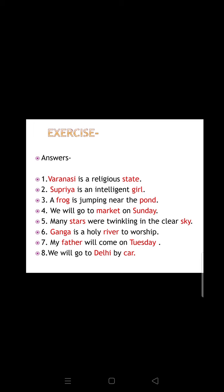Varanasi is a religious state — Varanasi is a place and state is also a place, so both are nouns. Next: Supriya is an intelligent girl — Supriya and girl are both person nouns. Third: a frog is jumping near the pond — frog is an animal and pond is a place, so both are nouns. Now try to solve the rest yourself and check your answers on the next page. In the next session we'll move forward and learn about kinds of nouns. Till then, practice the concept of nouns!